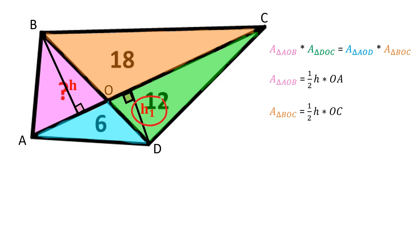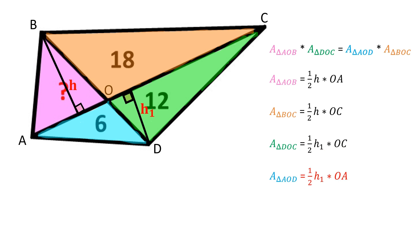Now let's draw the altitude H1 from angle D to side AC. Here is the formula of the area of the green triangle, and here we have the formula of the area of the blue triangle.